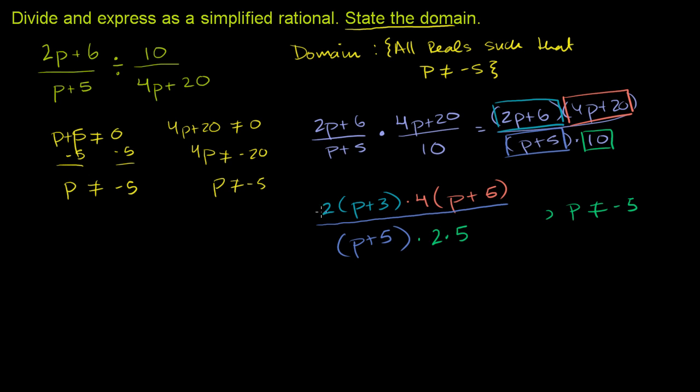Now, what can we cancel out? We have a 2 divided by a 2. Those cancel out. We have a p plus 5 divided by p plus 5. We know that p plus 5 isn't going to be equal to 0 because of this constraint, so we can cancel those out.